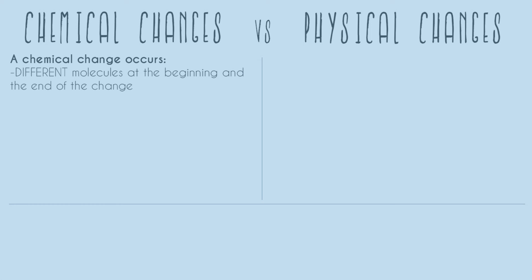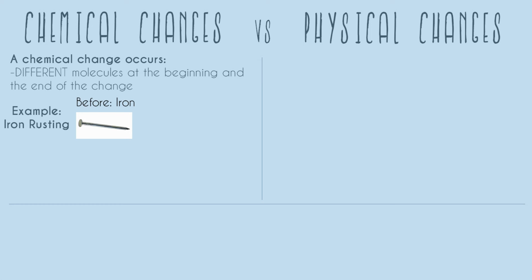So let's start with an example — iron rusting. At the beginning, before you have any change, you just have your iron. Let's picture a nail. And so now we know what our change is: this iron is going to rust.